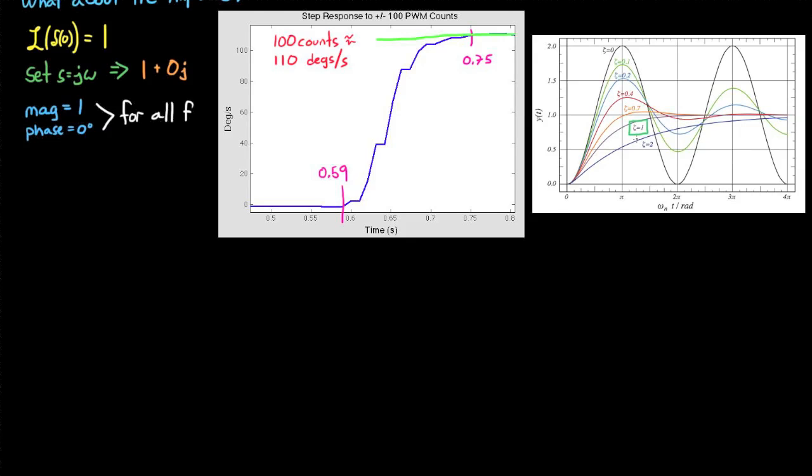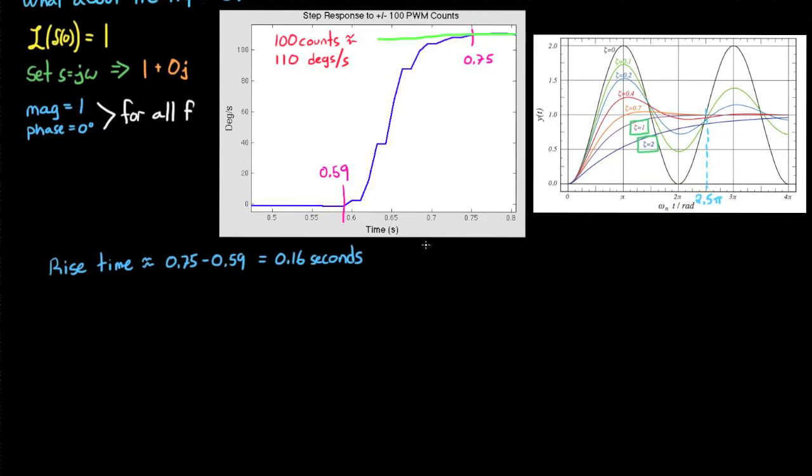So when we look at our chart, I would say that this falls somewhere between a damping ratio of 1 and 2. And our step response has a rise time of about 0.16 seconds. So if we look at our chart, and somewhere in between damping ratio of 1 and 2, it's fully risen maybe around 2.5 pi. So we can calculate the natural frequency for our system by taking 2.5 pi and dividing it by 0.16 seconds, which is about 49 radians per second. And so with that and a damping ratio of maybe around 1.4, we can now write the transfer function for our system as a second order equation.